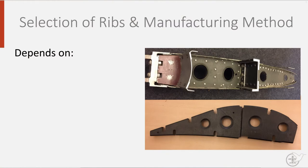What type of rib to choose is then the logical next question that needs to be answered. As always, when designing things, there is not one final correct answer. The type of rib — closed, with lightning holes, or truss-shaped, to name but a few options — depends on the loads it has to carry.